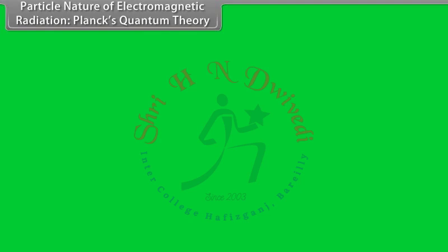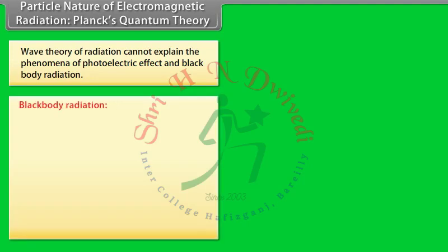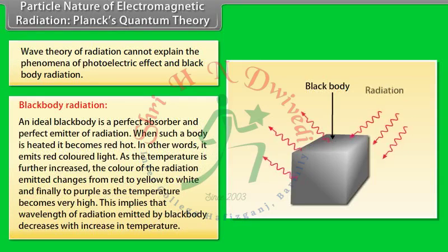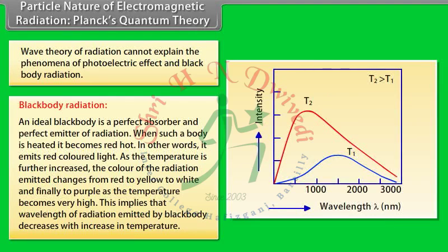Particle nature of electromagnetic radiation: Planck's quantum theory. Wave theory of radiation cannot explain the phenomena of photoelectric effect and black body radiation. An ideal black body is a perfect absorber and perfect emitter of radiation. When heated, it becomes red hot, and as temperature increases the color changes from red to yellow to white and finally to purple. This implies that the wavelength of radiation emitted decreases with increasing temperature. At a given temperature, intensity increases with decreasing wavelength, reaches a maximum, then decreases further.